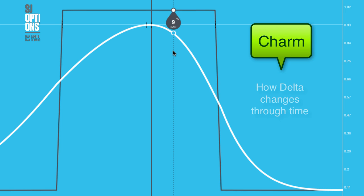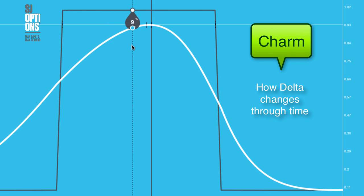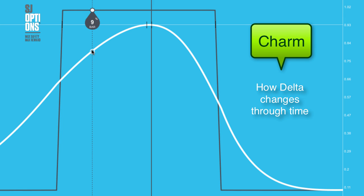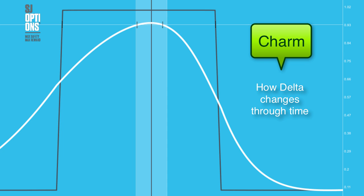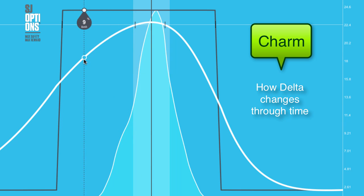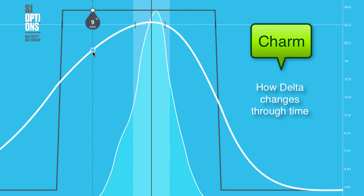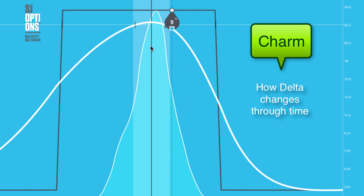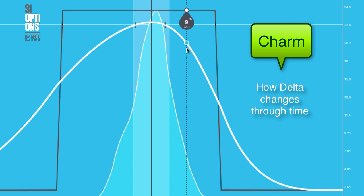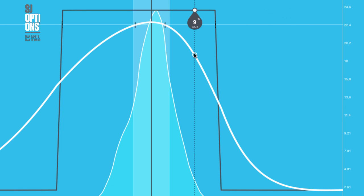There's another higher order Greek called charm. Charm in this case is actually working against you. Your charm is how your delta changes over time. So as we go through time in the trade, the angle of the profit curve becomes steeper on either side. Whether you're on the left side or the right side, the delta shifts against you. That's one of the problems with the trade — over time it becomes riskier and riskier, and the charm is designed poorly in this trade so that your delta is constantly moving against you.